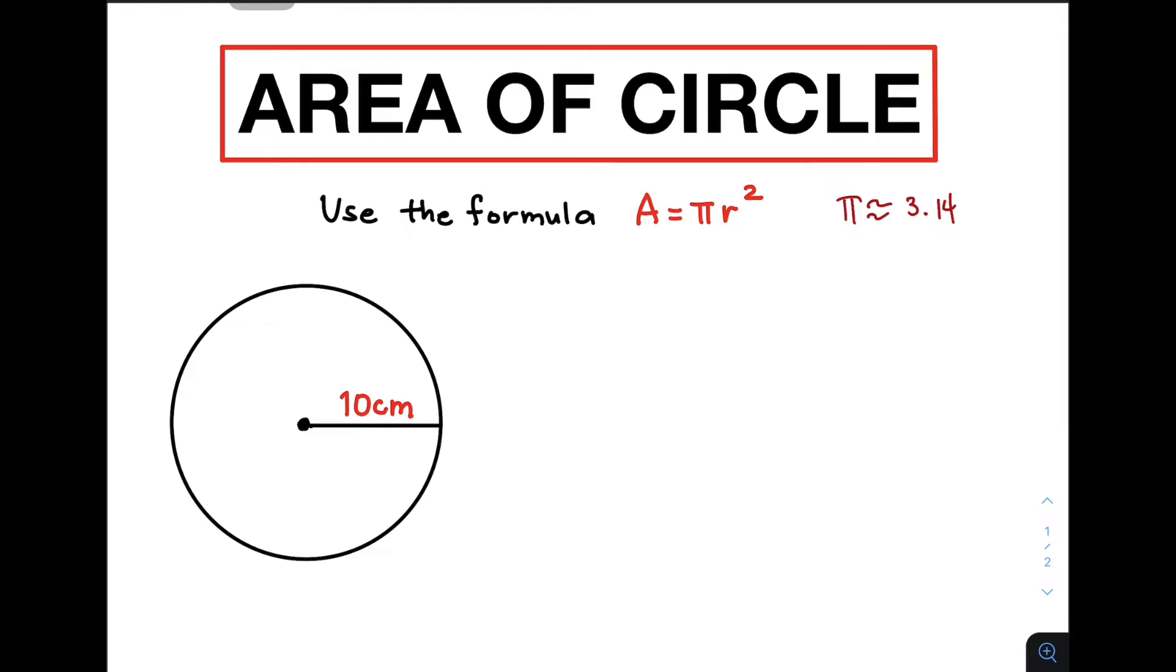So, know the difference. If this is the segment, this is your radius. And if you have a segment from one point of a circle going to another point of a circle, and it passes through the center, this is your diameter.